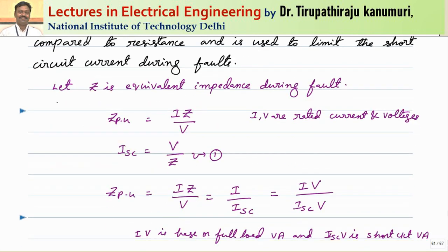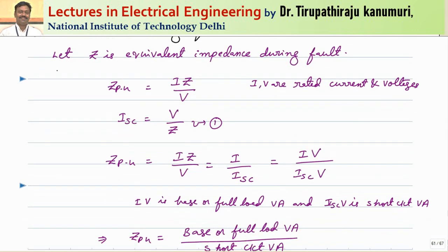What are the short circuit currents during a fault? How much fault current will pass? To analyze that, let us assume Z is the equivalent impedance during the fault condition — that means up to the fault point — which we can calculate using the impedance diagram.